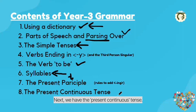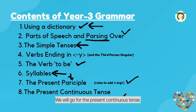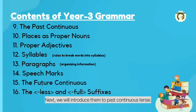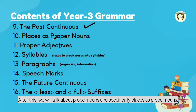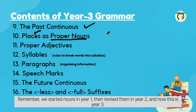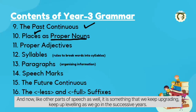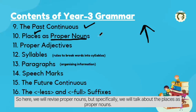Next we have the present continuous tense. After teaching how to add ING to verbs properly, we will go for present continuous tense. Then we will introduce past continuous. After this, we'll talk about proper nouns and specifically places as proper nouns. We started nouns in year 1, revised them in year 2, and now in year 3 nouns and other parts of speech are something we keep upgrading as we go through successive years.